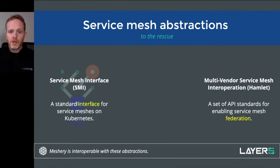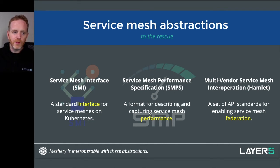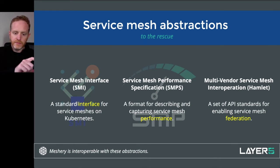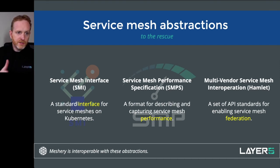Because there are so many service meshes out there, there are standards, specifications, and abstractions that have come about. One of those is the Service Mesh Interface (SMI). If you're familiar with CNI or CSI, then you would have a conceptual understanding for the mission and goal of SMI, which is to provide more or less the lowest common denominator set of APIs — things like traffic splitting and traffic metrics — for your organization to integrate with as a layer of abstraction across which any given service mesh may plug in behind.